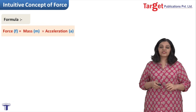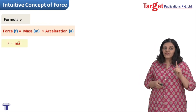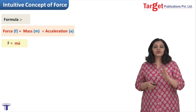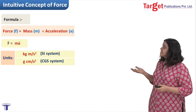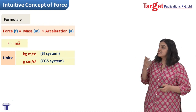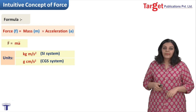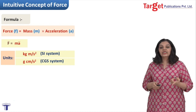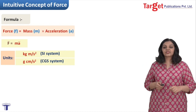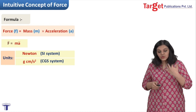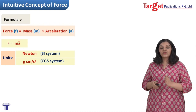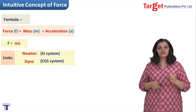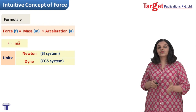Let's write down the formula in terms of symbols: F = MA. F is a vector and A is a vector, so there are bars on top of them. The unit of force is kg meter per second squared in the SI system and gram centimeter per second squared in the CGS system. However, we don't usually call them by these names — the unit of force in the SI system is known as newton, and in the CGS system it is known as dyne. So you have newton and dyne as the units of force.